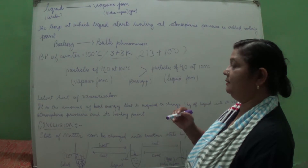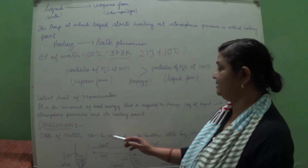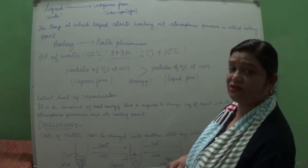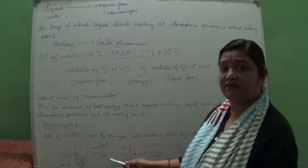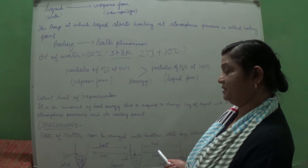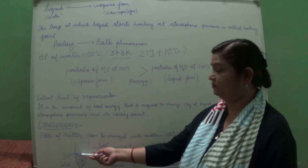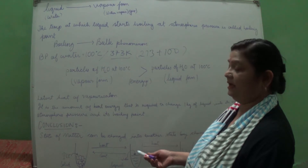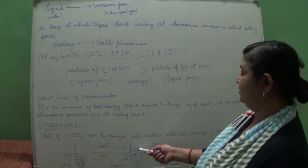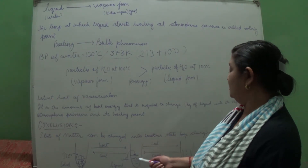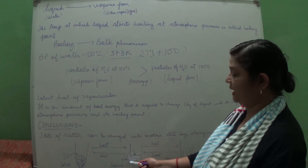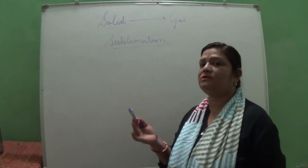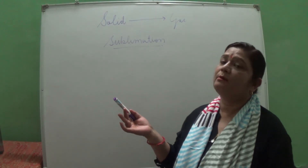The conclusion is that the state of matter can be changed into another state by changing the temperature. By changing the temperature, solid can be converted into liquid and liquid can be converted into gaseous form. Using the example of water: when we apply heat it changes into liquid form; when we cool the liquid it can again change into ice. When we heat the liquid it changes into vapor, and when we decrease the temperature it will again form water.